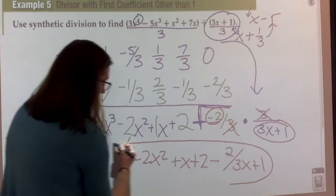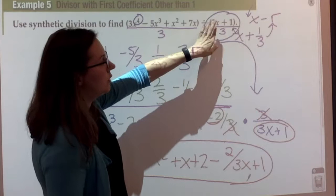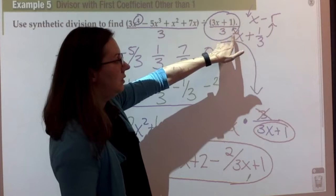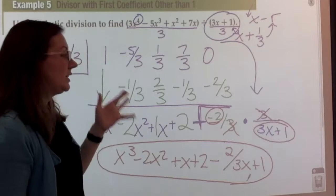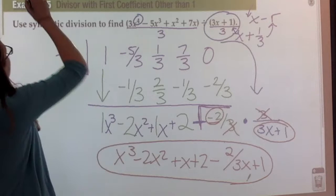All the work is the same. If the leading coefficient on our divisor is not 1, we divide everything by that coefficient so we can get it into x minus r form. Our r value at that point could be fractional, and so could our coefficients. But all the work through there is similar. We're going to do two more examples of this type.